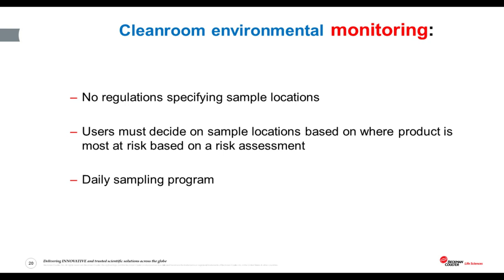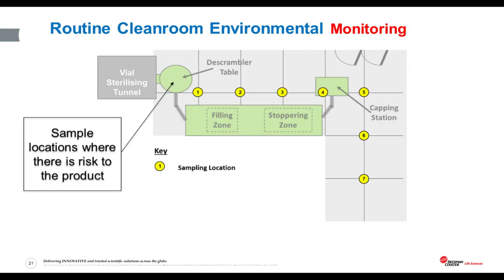Now we come to clean room environmental monitoring. For monitoring, there are no hard and fast rules — just that the user must make a risk assessment of where the product may be exposed to airborne contamination in the manufacturing process, and set sampling locations at these points for their routine environmental monitoring program. Taking another look at the same example, in this theoretical case the user looks at their manufacturing process, decides on those locations where the product may be at risk, and lays out their sampling program accordingly. You'll notice these sampling locations for routine environmental monitoring are in very different locations to those used for classification. Please avoid using the same locations you do for classification for routine monitoring — it's not how it should be done.